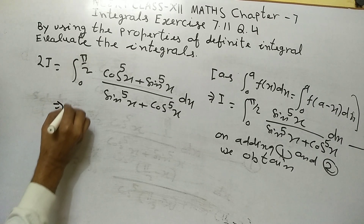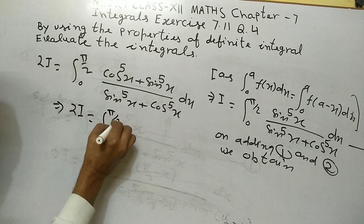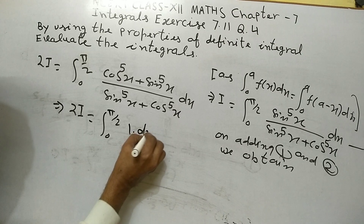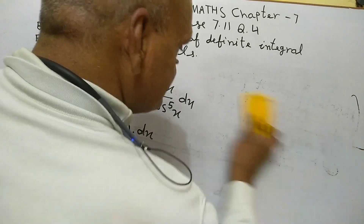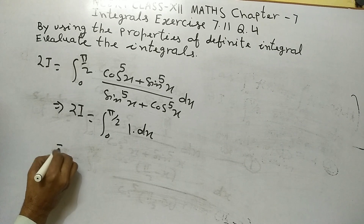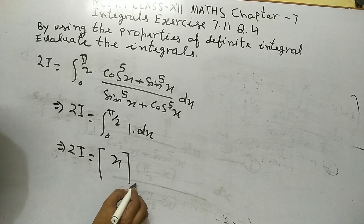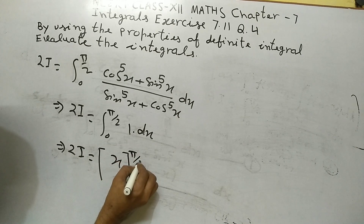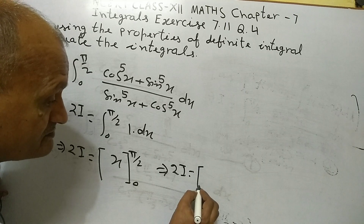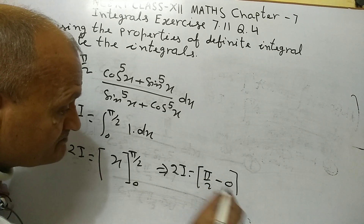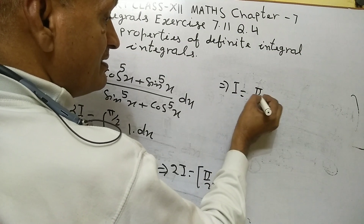This implies 2I equals integral from 0 to π/2 of 1 dx, which equals [x] from 0 to π/2. So 2I equals π/2 minus 0, which implies I equals π/4.